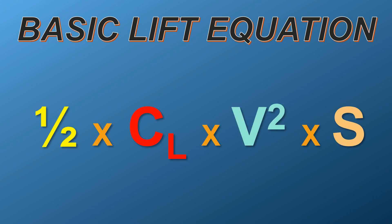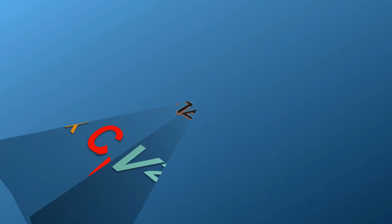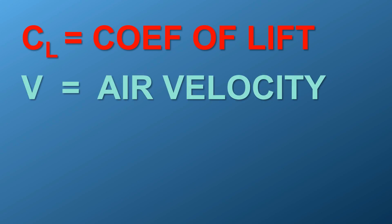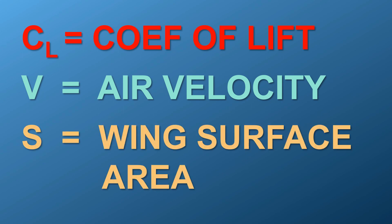Now we very quickly review the lift equation. This is important, as we need to understand what helicopters can and can't do to vary the lift vector. The basic lift equation for the amount of lift produced is ½ Cl times v squared times s. Cl is the coefficient of lift, which is explained later. V is the speed of the aerofoil through the air, and S is the surface area of the aerofoil.